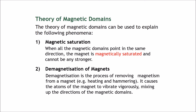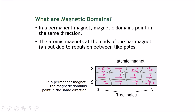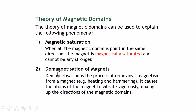The theory of magnetic domains can be used to explain the following phenomena. The first is magnetic saturation: when all magnetic domains point in the same direction, the magnet is magnetically saturated and cannot be any stronger. If you can get all of them to point in the same direction, the magnet will be really strong. The next phenomenon is demagnetization.